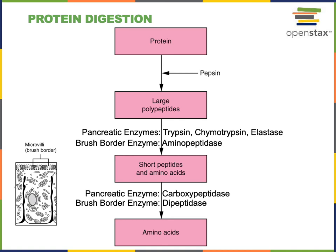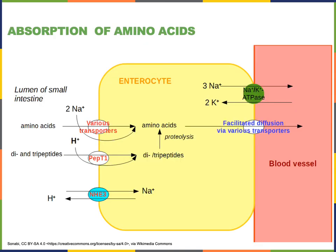Following the chemical digestion of protein, amino acids will be absorbed. The absorption of amino acids involves a secondary active transport mechanism. There's a wide variety of amino acid transport proteins that use sodium co-transport mechanisms, similar to transporters for monosaccharides like glucose, using the concentration gradient of sodium to drive the transport of amino acids across the apical surface of the enterocyte.